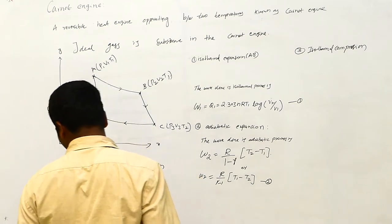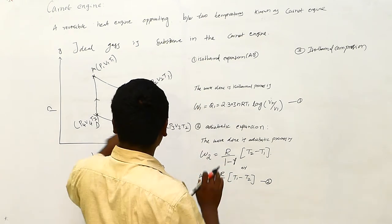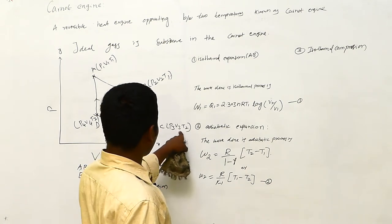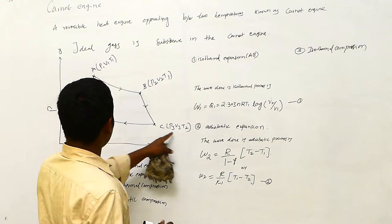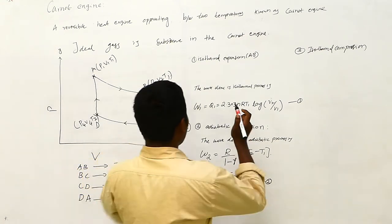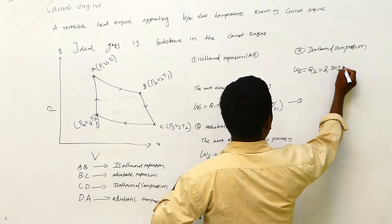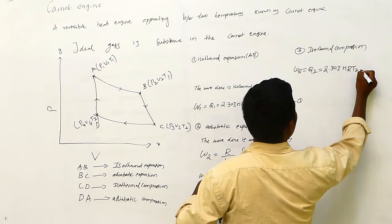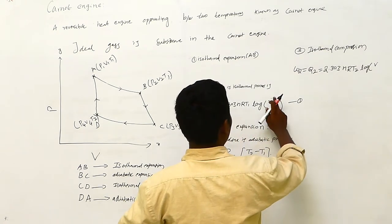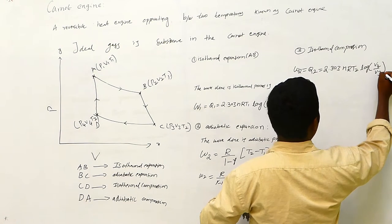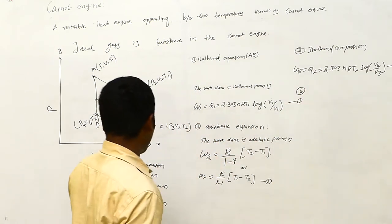For isothermal compression C to D: the state goes from P3, V3, T2 to P4, V4, T2 — temperature stays constant at T2. Using the same isothermal work formula: W3 = Q2 = 2.303 nRT2 log(V4/V3), which is equation number three. The fourth and final process is D to A, which is adiabatic compression.